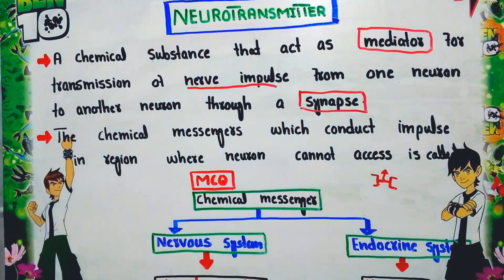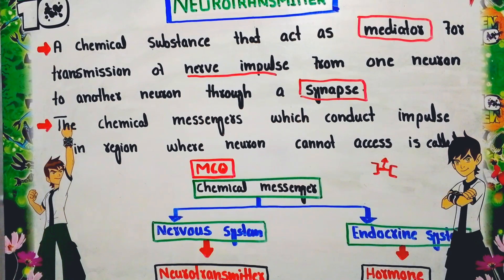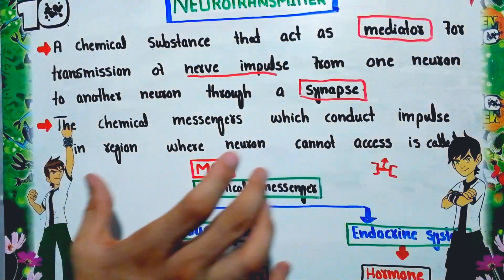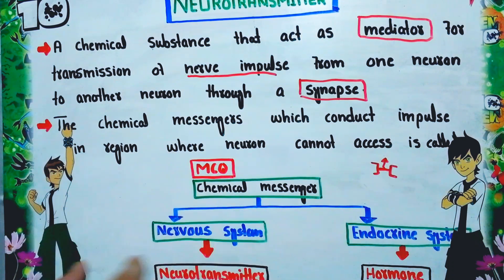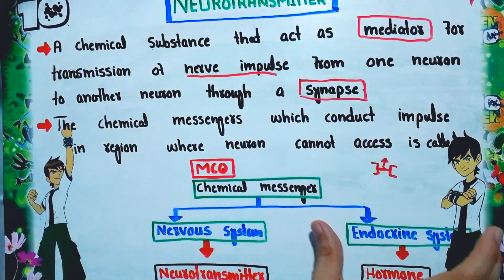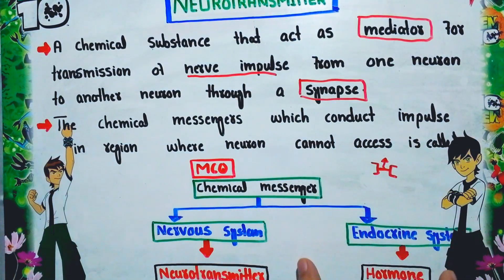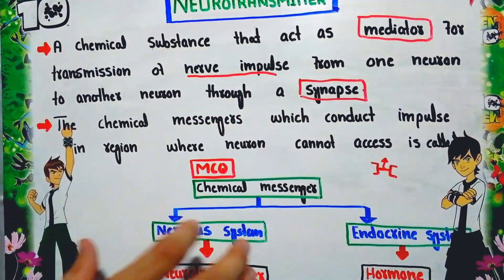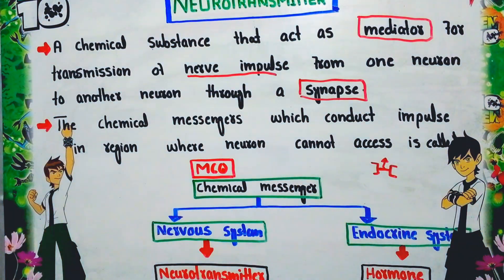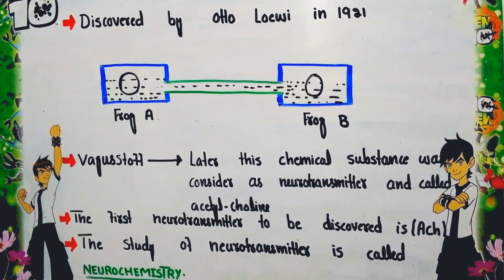Neurotransmitters are chemical messengers found in two types of systems. When the chemical messenger is found in the nervous system, it is called a neurotransmitter. When found in the endocrine system, it is called a hormone. This is an important point to remember related to neurotransmitters.